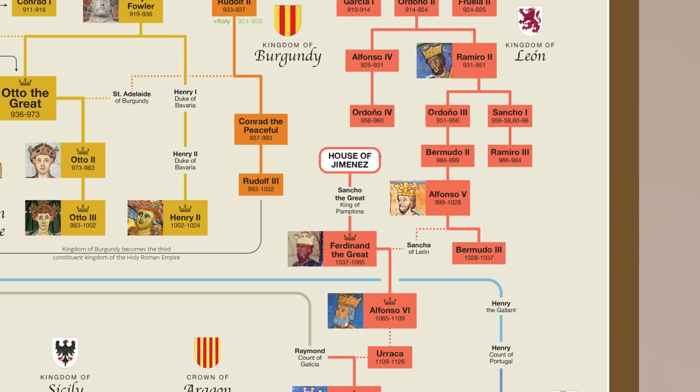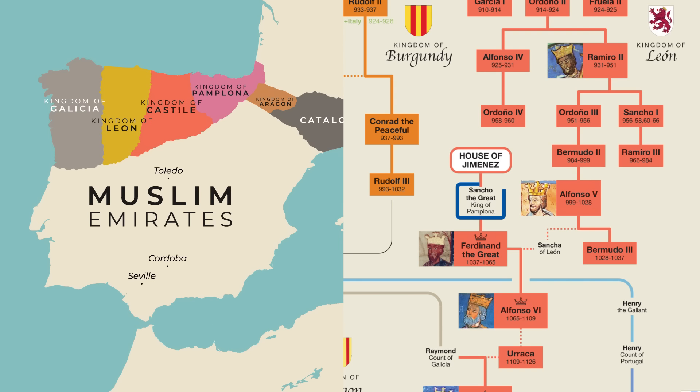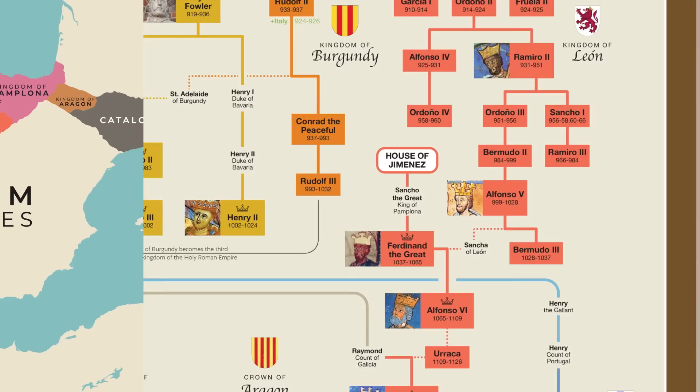Initially, the Jiménez dynasty ruled all four of the Christian kingdoms in what we now call Spain. King Sancho the Great's three sons ruled the Kingdom of Pamplona, the Kingdom of Aragon, and the Kingdom of Castile and Leon. Ferdinand the Great inherited Castile and Leon and later proclaimed himself emperor in 1056. By this time, the Caliphate of Cordoba had fallen and the Muslim rulers of former Umayyad territories were divided into many local emirates known as the Taifas. There was a lot of infighting among them and their weakness opened them up to loss of territory to the Christians.